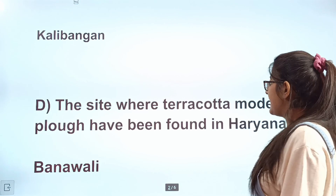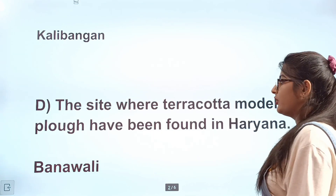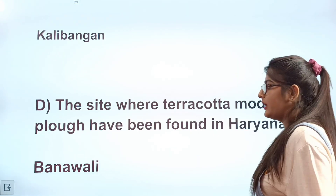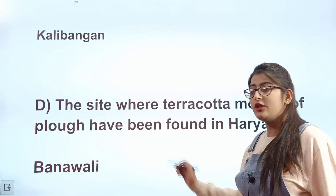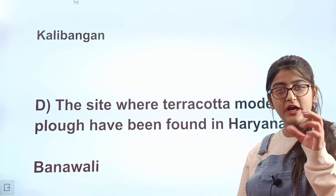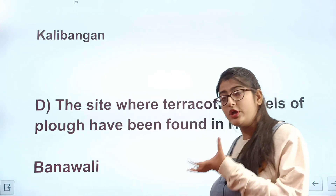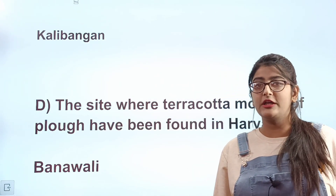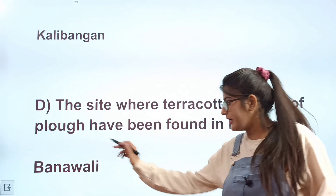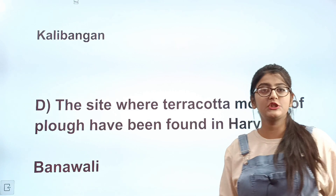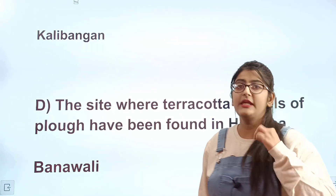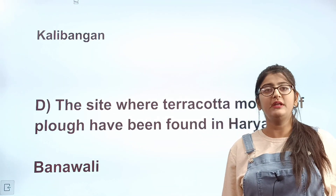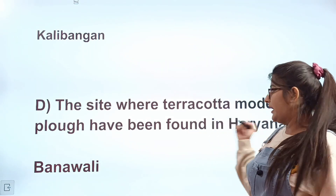Let's see question number D. The site where terracotta models of a ploughed field have been found, located in Haryana. The answer is Banawali. You can remember its location on the map — it is the D marked site in Haryana.